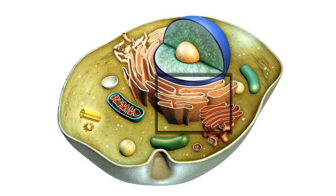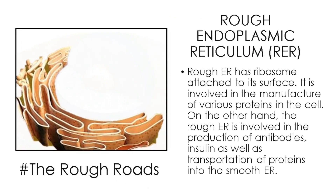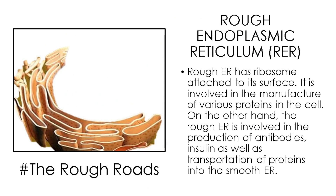Rough endoplasmic reticulum. Unlike the smooth endoplasmic reticulum, rough ER has ribosomes attached to its surface. It is involved in the manufacture of various proteins in the cell. The rough ER is also involved in the production of antibodies and insulin, as well as transportation of proteins to the smooth ER.